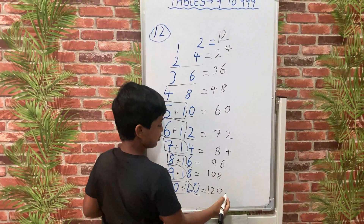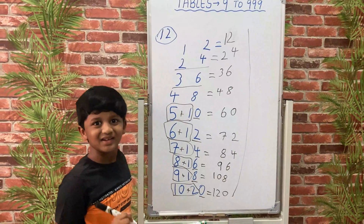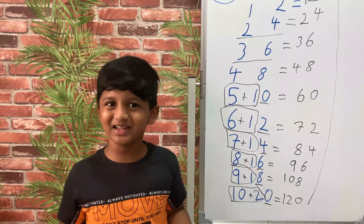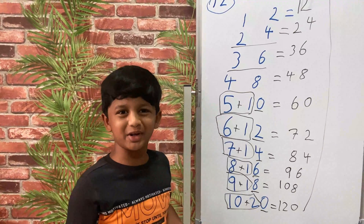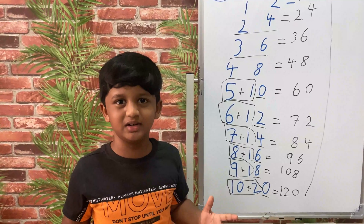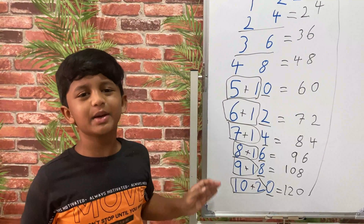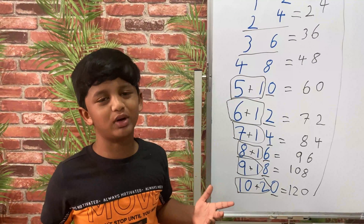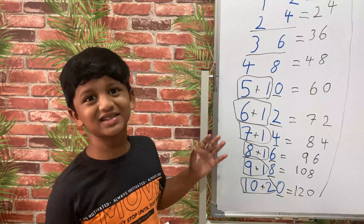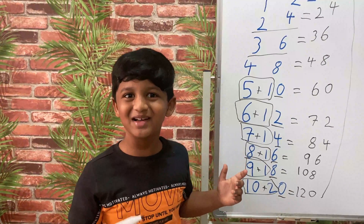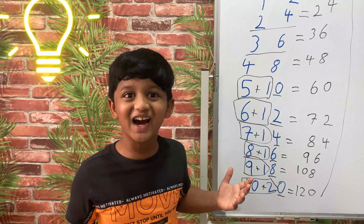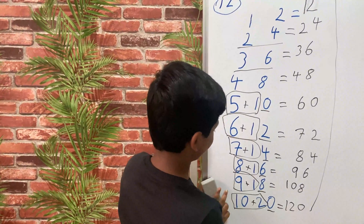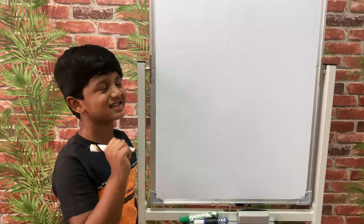Here is our 12th table. This is an amazing trick! Friends, we used to mug up tables, which is very, very difficult. Up to which table do we remember? I guess most of us remember up to 20. But using this trick, we can write tables up to 999. Let's take one more example — the 46th table.